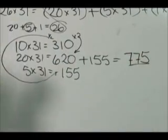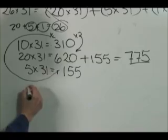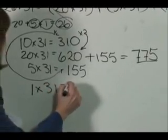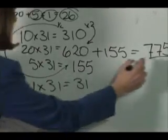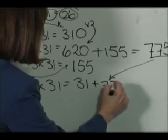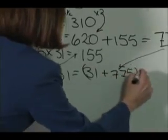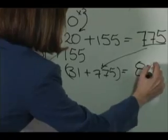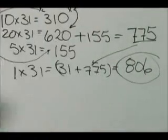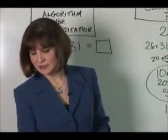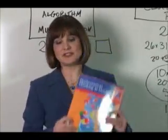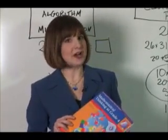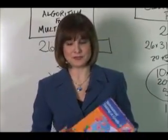775 so far. So now all I need is one more. And I know 1 times 31 equals 31. And then I just add the 775 here. And I get 806. My answer. Students who learn math via TERC Investigations rarely become efficient, confident, and fluent math users.